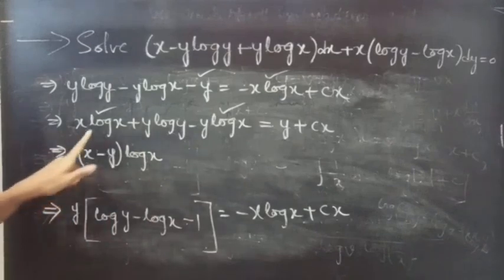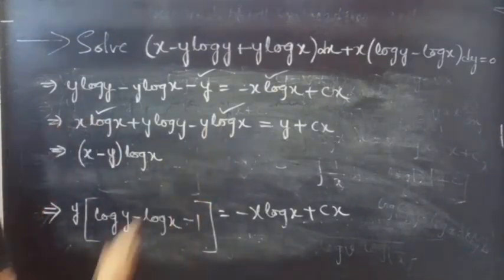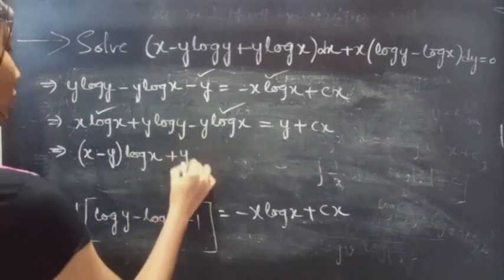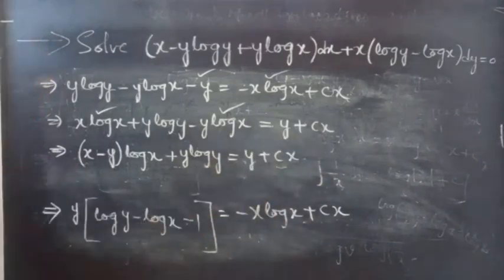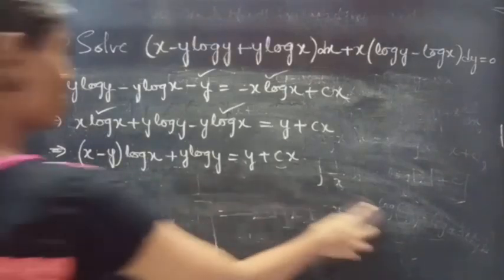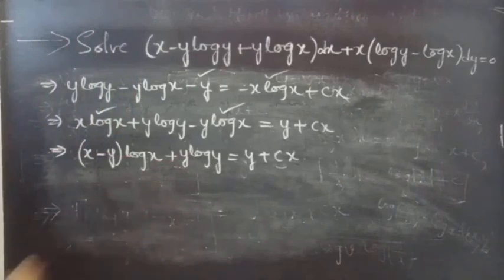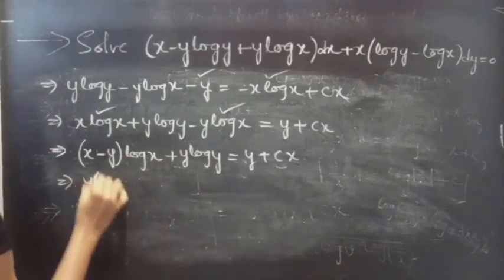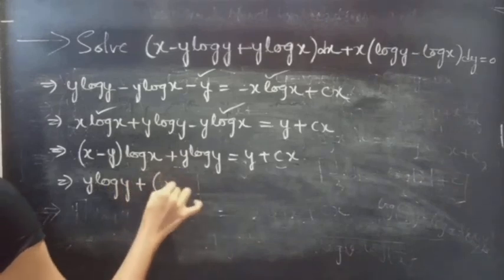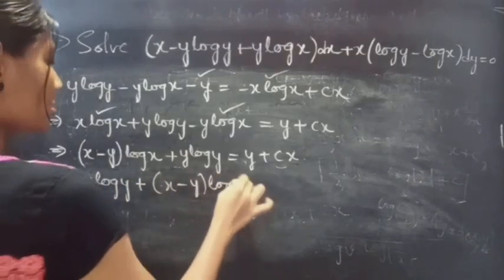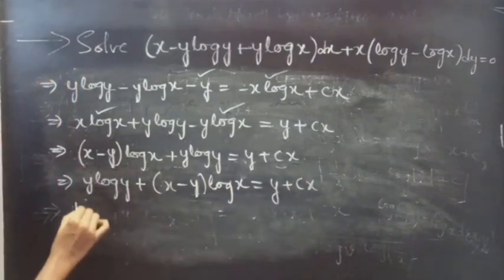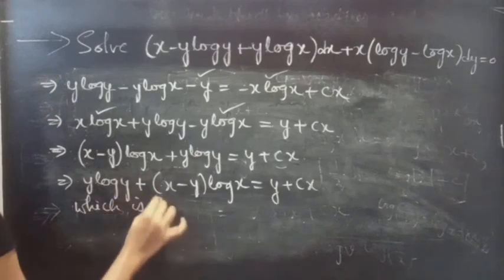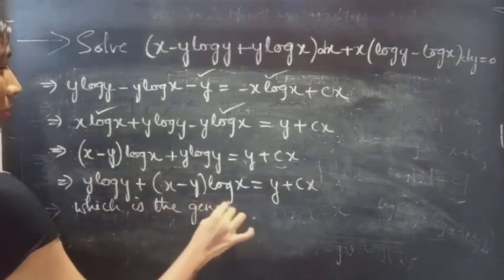So the general solution is: x minus y times log x plus y log y equals y plus cx. This can also be written as y log y plus x minus y times log x equals y plus cx. This is the general solution of the given differential equation.